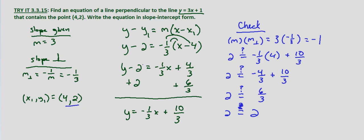And that verifies that yes, it satisfies the equation because 2 does equal 2. So the equation of a line perpendicular to y equals 3x plus 1 that contains the point 4, 2 in slope intercept form is y equals negative 1 third x plus 10 thirds.